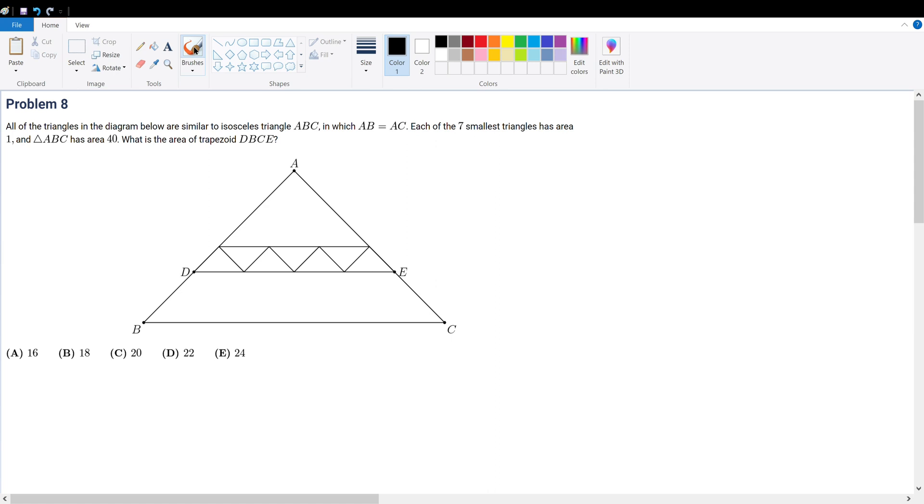Problem 8. All of the triangles in the diagram below are similar to isosceles triangle ABC, in which AB is equal to AC. Each of the 7 smallest triangles has area of 1 and ABC has an area of 40. What is the area of trapezoid DBCE?